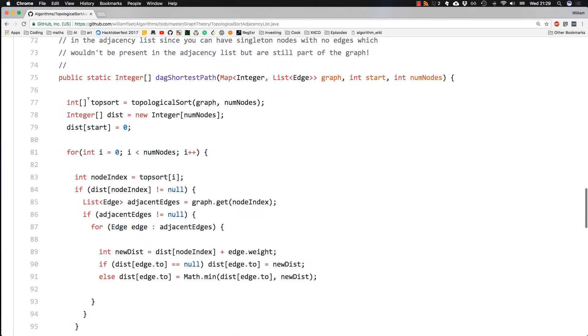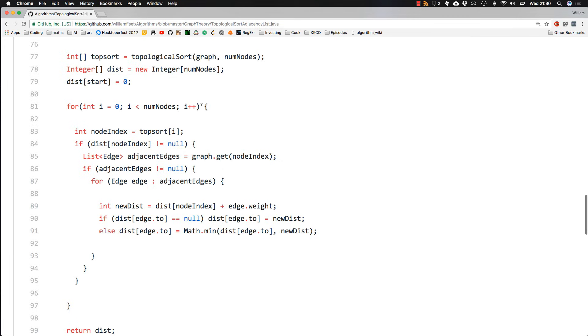So what we do is find a topological ordering for our nodes. I covered this in the last video, then initialize our distance array and then set the starting node's distance to be zero. And all we do is we loop through each node.